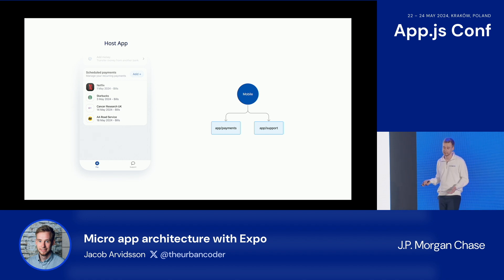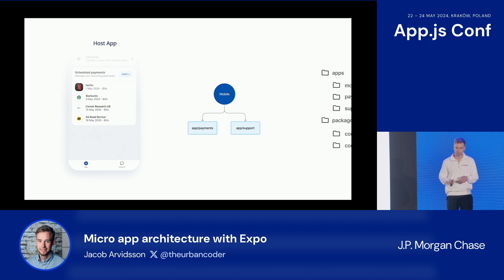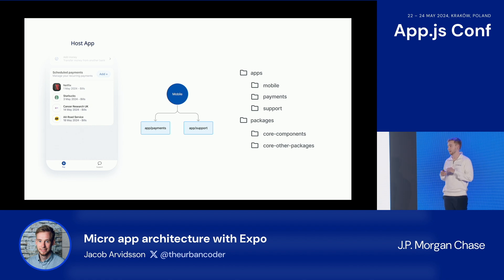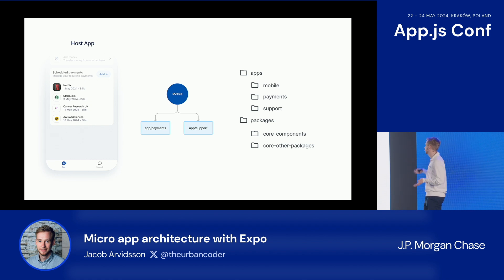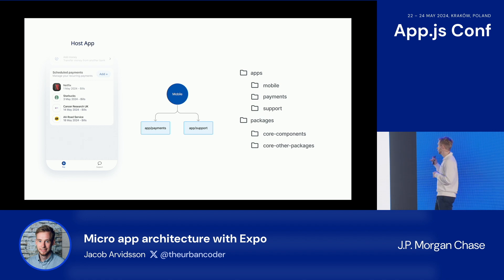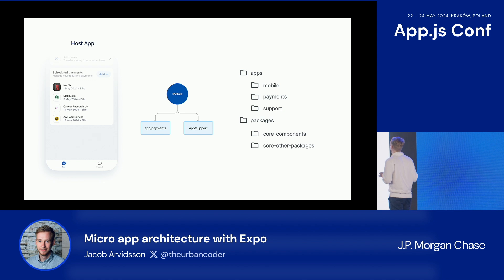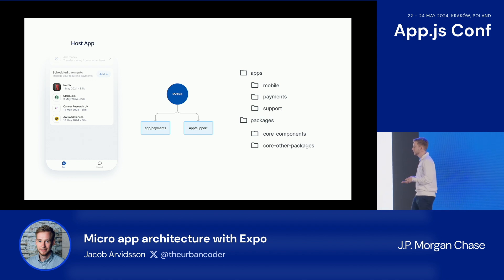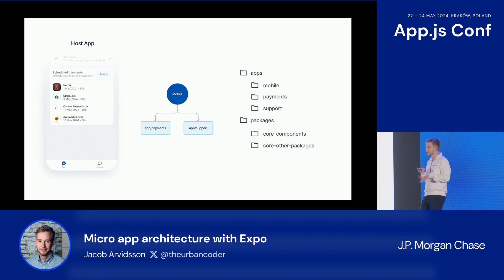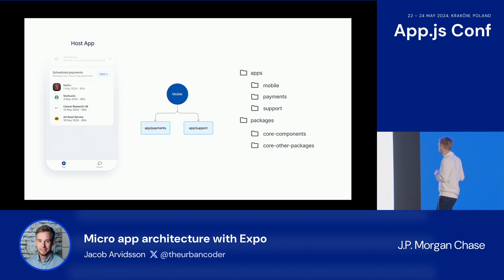So how do we do this in React Native? We're using a monorepo. In this demo, I'm using a typical monorepo structure — we have our apps, which are the mobile app, the payments app, and the support app. Then we have some packages for things that everyone needs, like analytics, design system, networking, and so on.